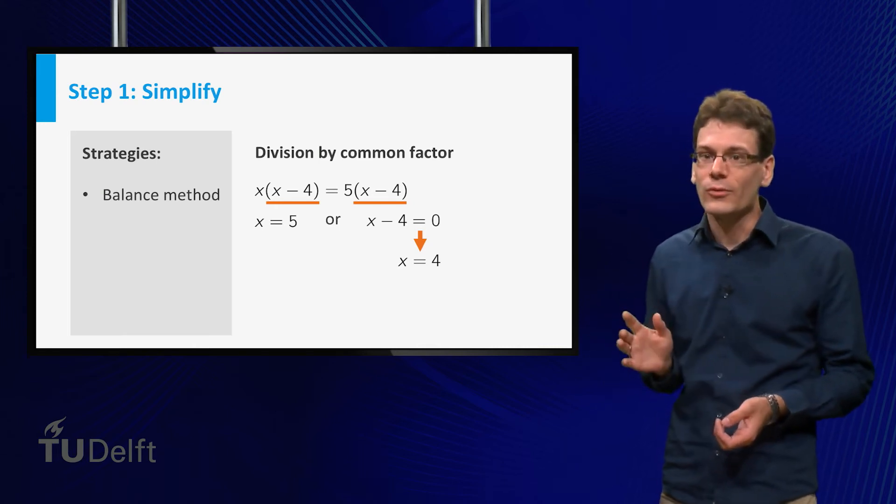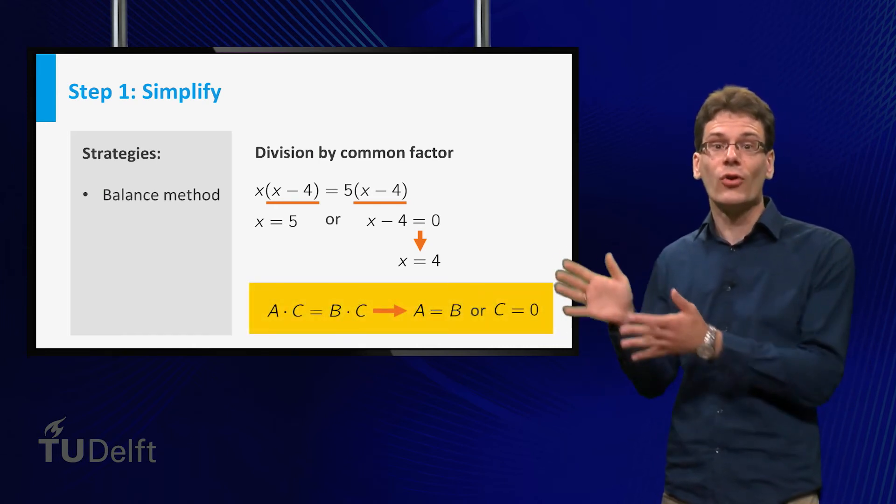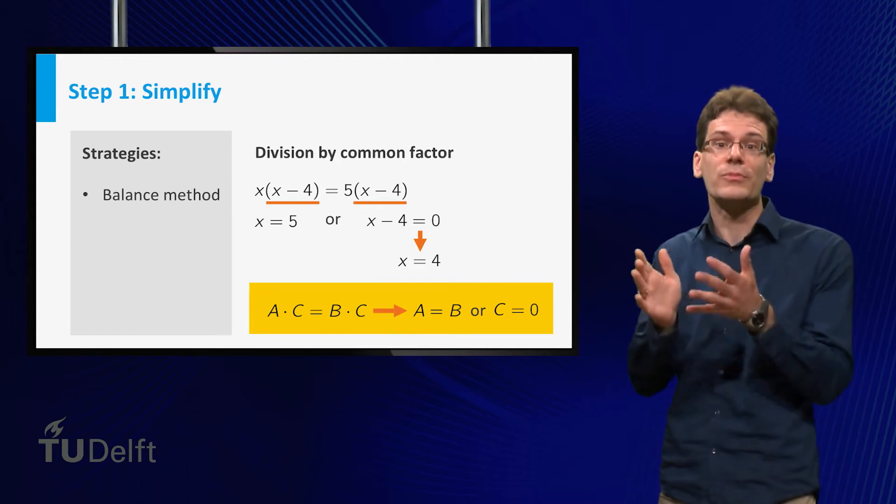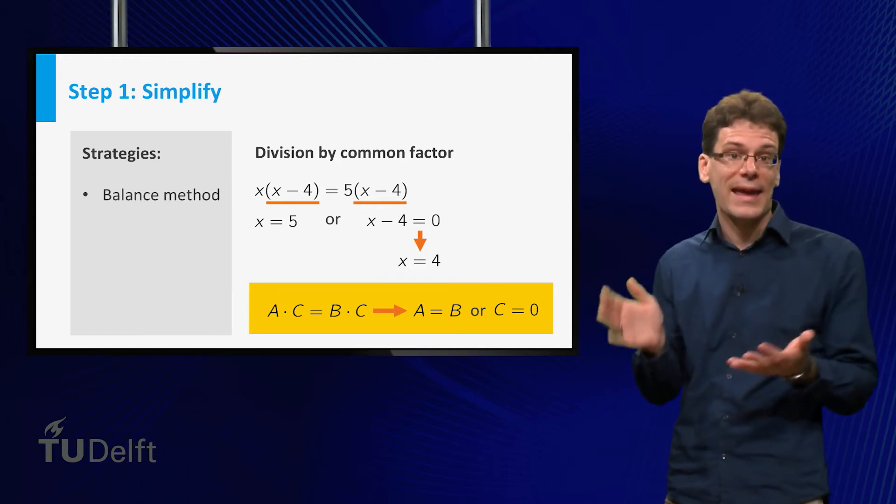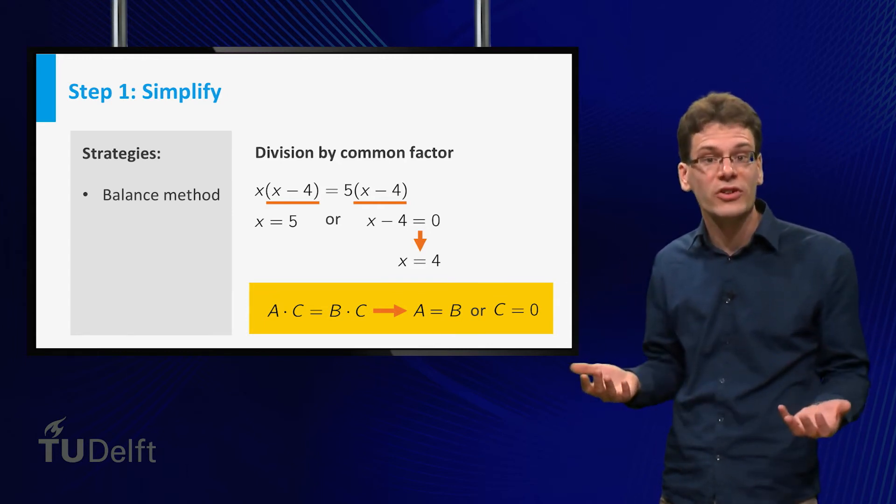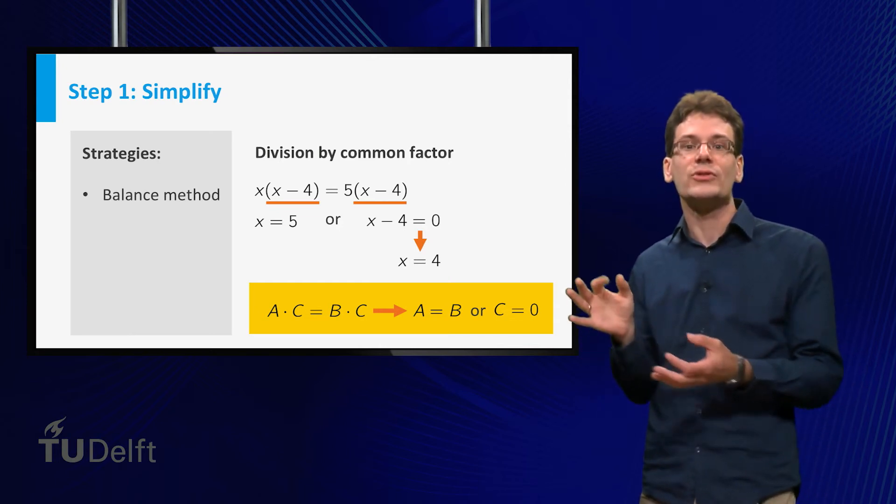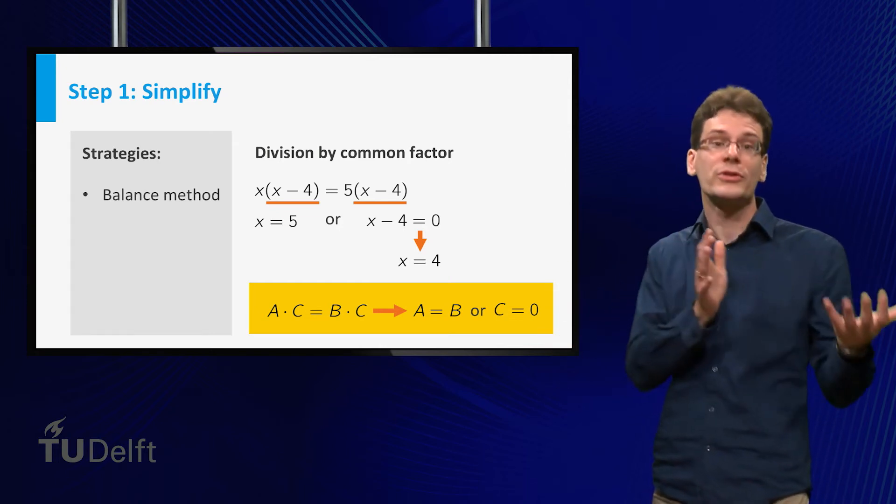In general, if your equation has the form a times c equals b times c, where a, b and c are certain expressions, then you can simplify this to a equal to b or c equal to 0.